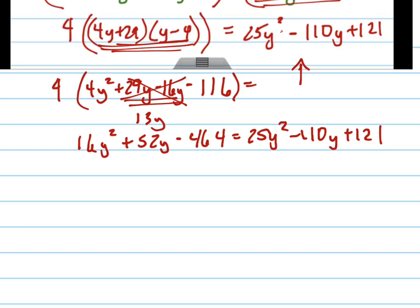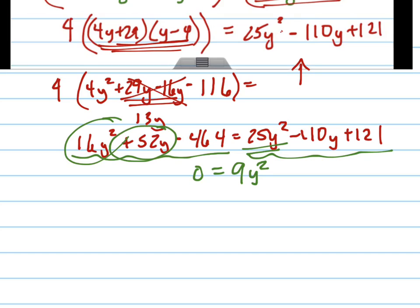So now, notice what I have here is a quadratic equation. And in order to solve a quadratic equation, so it took all that time just to get rid of my radicals. Now I want to put this quadratic equation in standard form, and then use either factoring or the quadratic formula or completing the square to solve it. So I'm going to move everything to the right, setting it equal to 0. So subtracting 16y squared from 25y squared gives me 9y squared. Subtracting 52y from 110 gives me negative 162y. And adding 464 to 121 gives me positive 585.